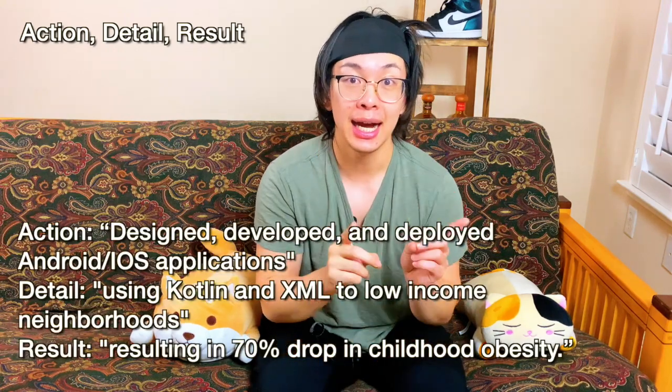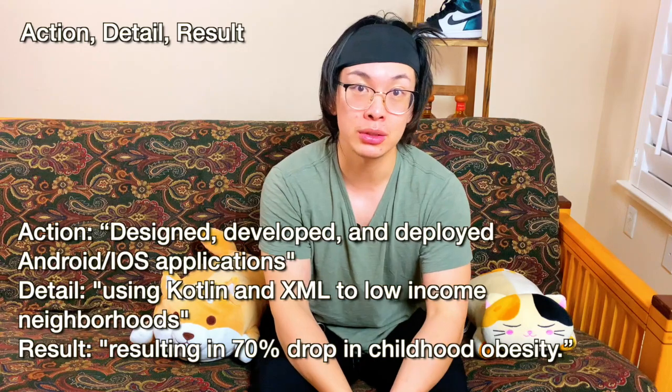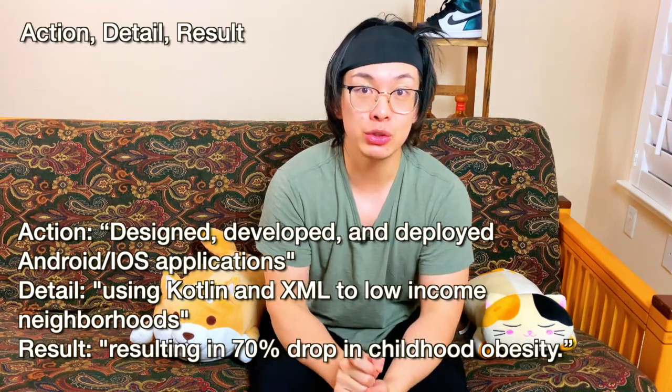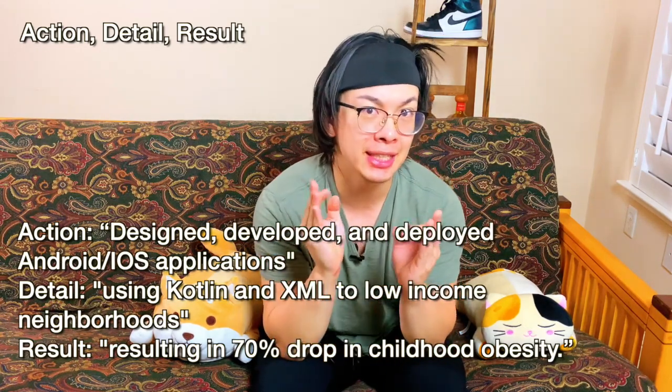So to help focus your efforts, I would recommend the action-detail-result formula. The action here is 'designed, developed, and deployed Android or iOS applications.' The detail is the language, tech stack, or the nuance that makes the activity special. And the result is the impact. Usually metrics and numbers are good enough to qualify the result, but sometimes the result can be intangible, especially in projects designed to be goodwill and charity. Ultimately, each accomplishment you state should make me go — wow, this is awesome — or for lack of a better way of putting it, it makes your engineering effort sexy.